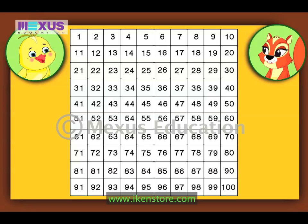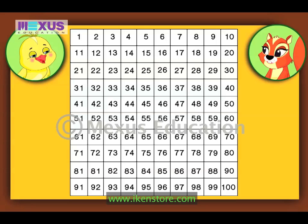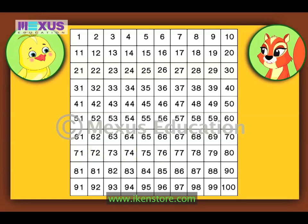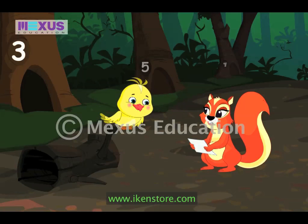That's right Amber. Now can you find the even numbers between 70 and 80? I know that even numbers end in 0, 2, 4, 6, or 8. So the even numbers between 70 and 80 are 72, 74, 76, and 78. Very well done Amber, that's the correct answer.